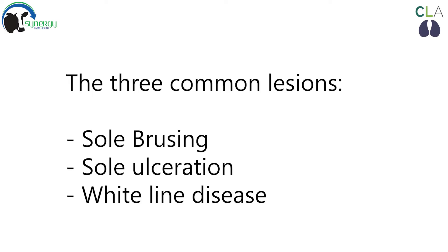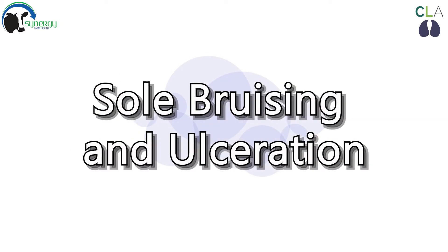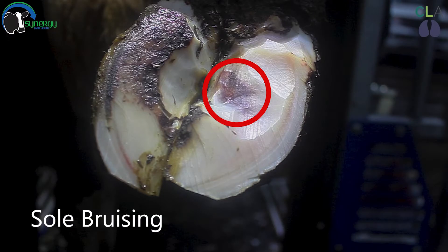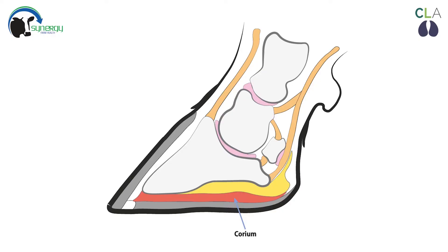We will talk in detail about the three common Claw Horn Lesions. Sole bruising and sole ulceration are caused in the same way, and sole bruising is often seen before sole ulceration. Pressure occurs at a particular site in the foot, as shown in the diagram, usually resulting in bleeding at the corium — the area from where sole horn grows.